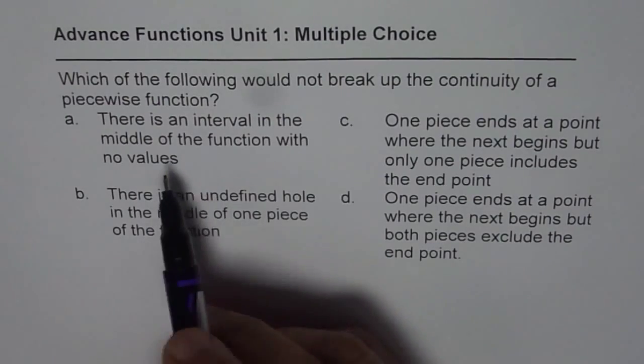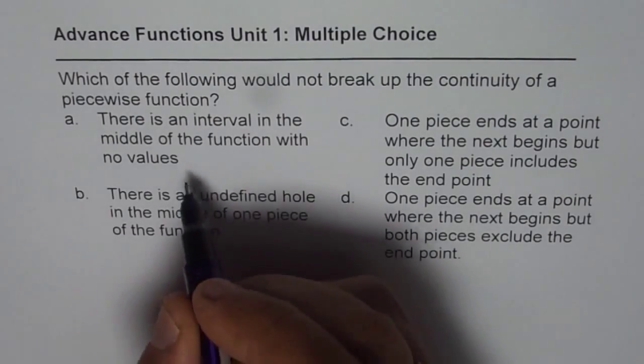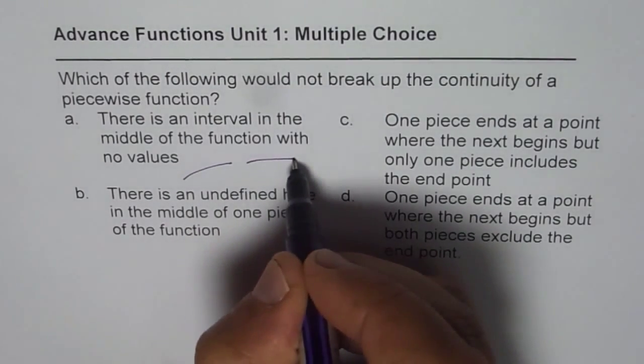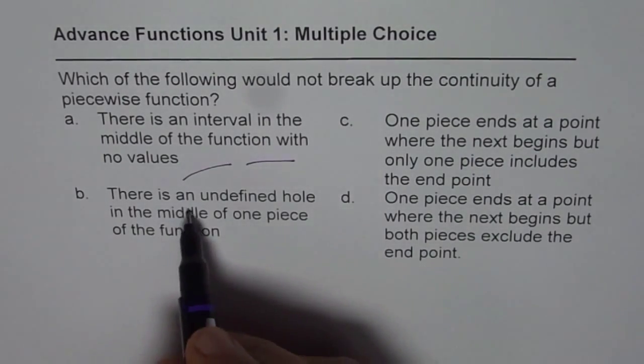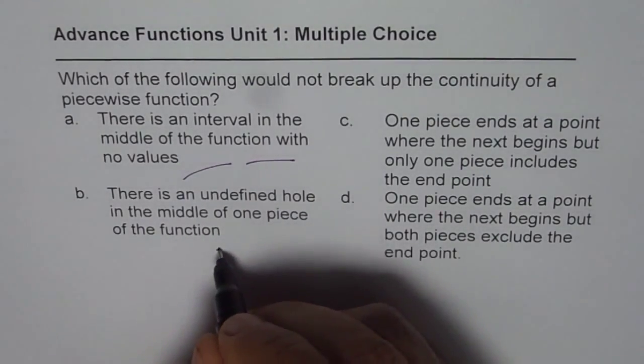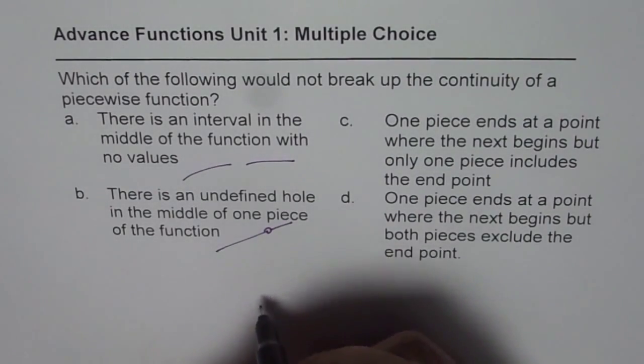So, first one, there is an interval in the middle of the function with no values. Let's say that is kind of a function, of course this is discontinuous. There is an undefined hole in the middle of the piece, that means something like this. It is discontinuous at a hole.